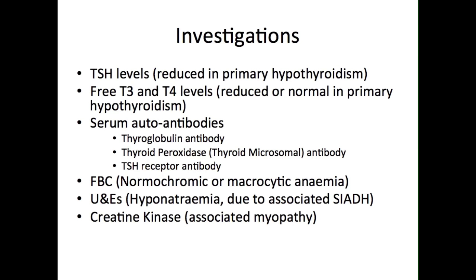An autoantibody screen for thyroglobulin antibody, thyroid peroxidase, and TSH receptor antibodies should also be carried out, as these are associated with autoimmune thyroiditis. Routine full blood count and U&Es would indicate a normochromic or macrocytic anaemia, and hyponatraemia associated with SIADH. If there is a slightly increased TSH level but a normal free T4 and T3 level, this is known as subclinical hypothyroidism. This is usually due to chronic autoimmune thyroiditis and results in overt hypothyroidism in about 2–4% of cases each year. Treatment is usually not necessary, although regular annual thyroid function checks would be required.